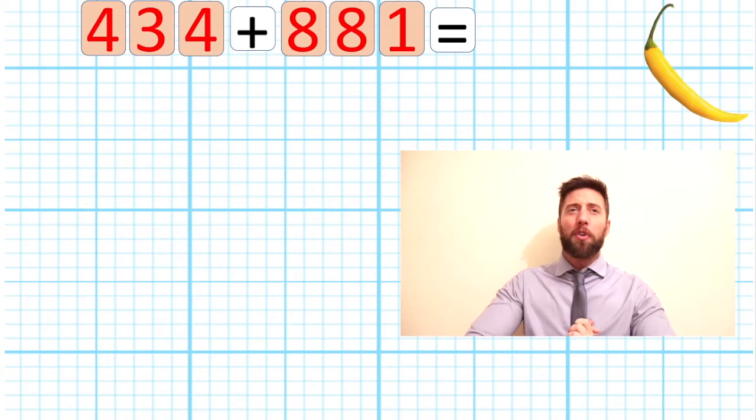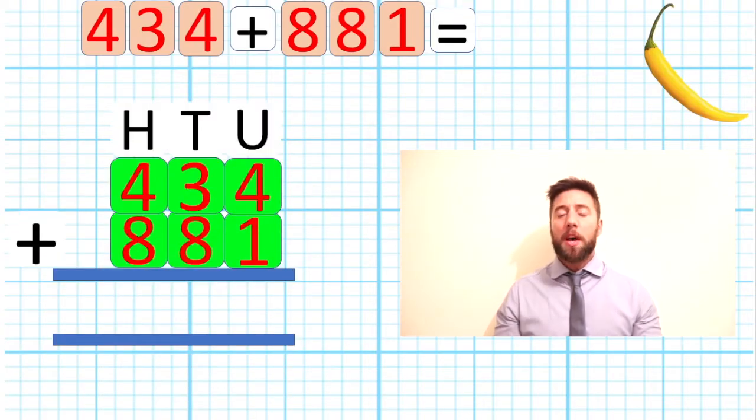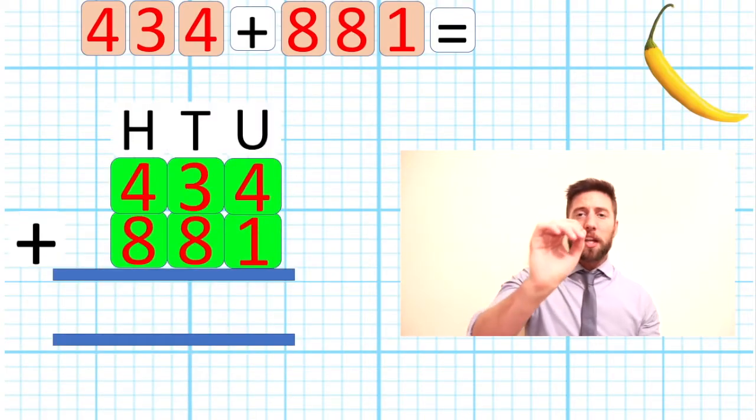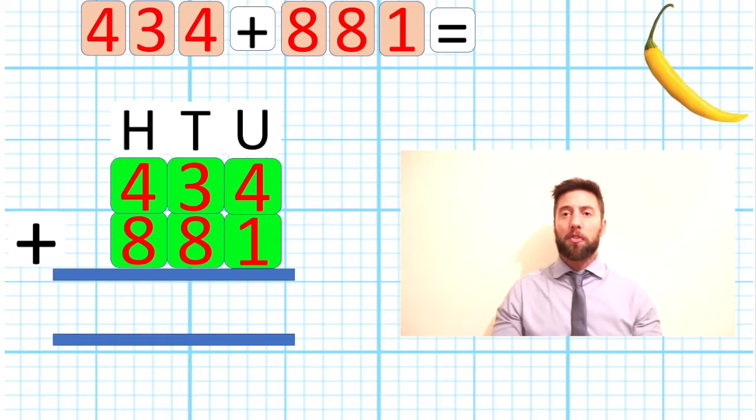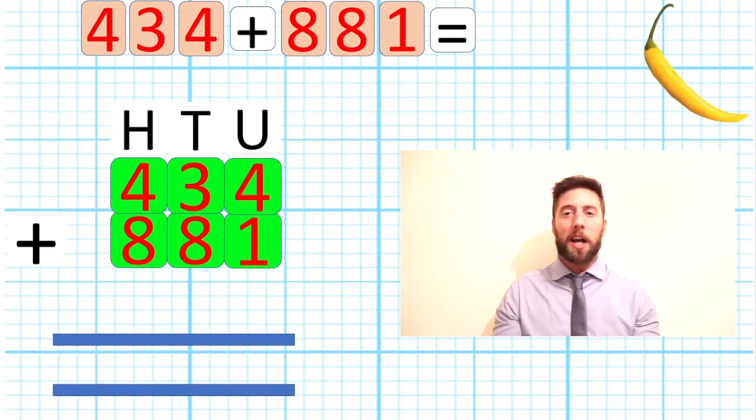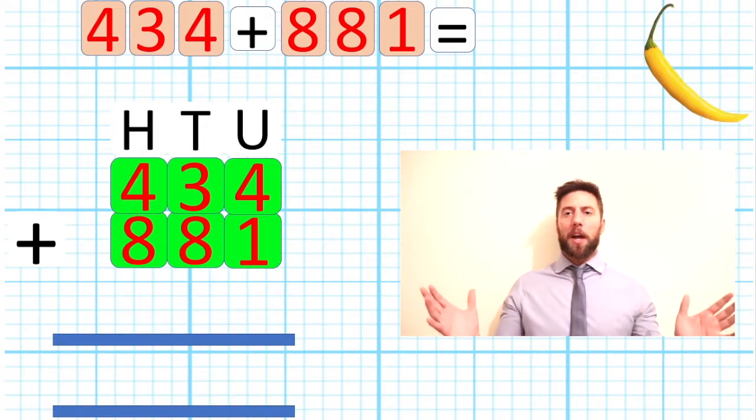Okay, let's have a look at the number 434 add 881. Now same thing, we're gonna lay out our columns exactly as we should, put all our things in place: our units, tens, and hundreds, our addition sign and our equals bar. Okay, perfect, we are looking good. Remember, let's drop that bar down so it gives us that spare row. We're gonna see how we're gonna use it in this question.